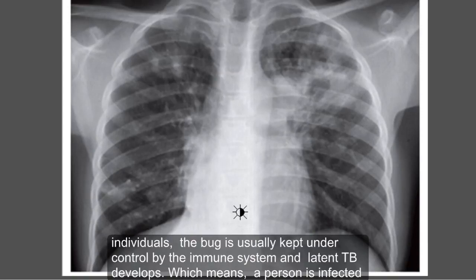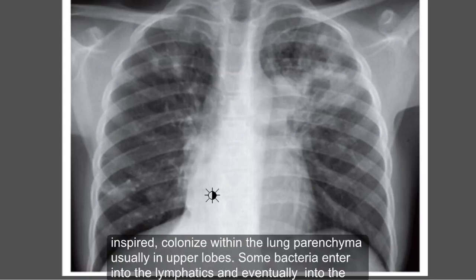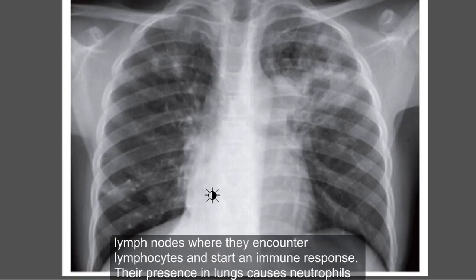In many otherwise healthy individuals, the bug is usually kept under control by the immune system and latent TB develops — meaning a person is infected with Mycobacterium tuberculosis but there is no active TB. Mycobacterium tuberculosis is an acid-fast bacillus. The bacteria, once inhaled, colonize within the lung parenchyma, usually in the upper lobes.